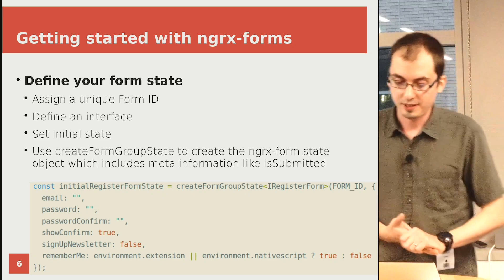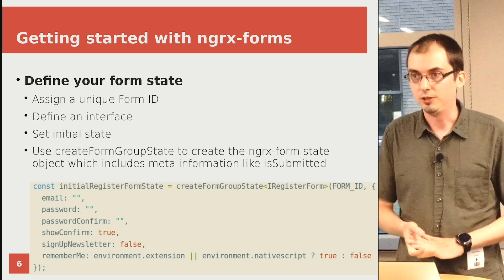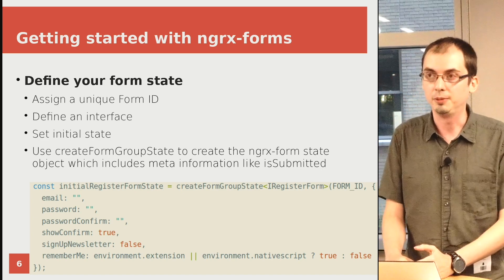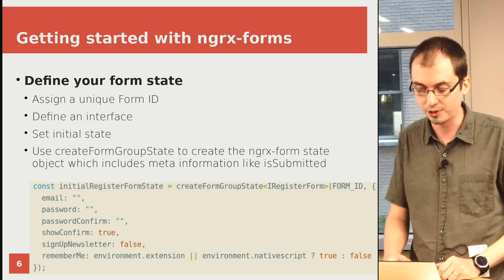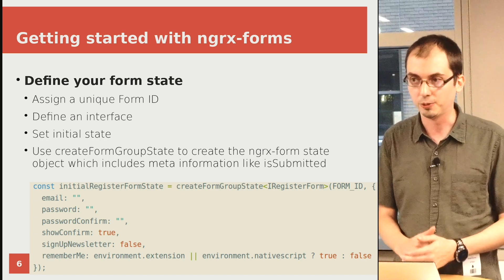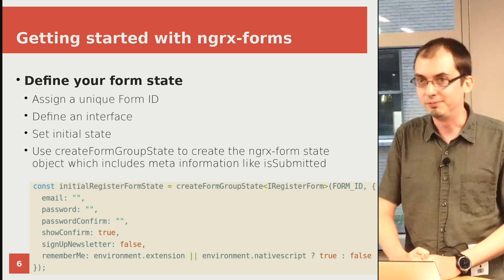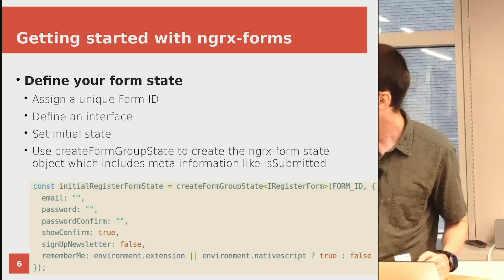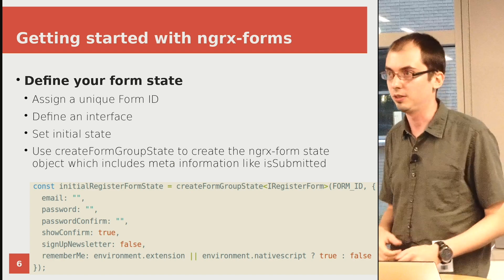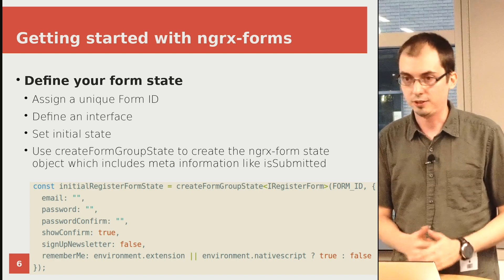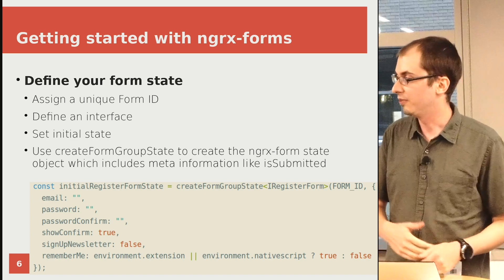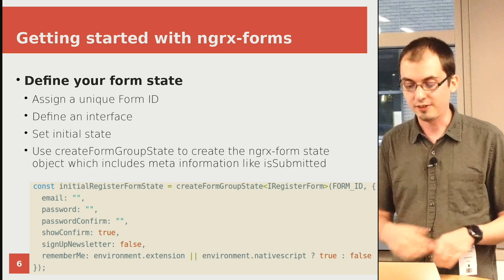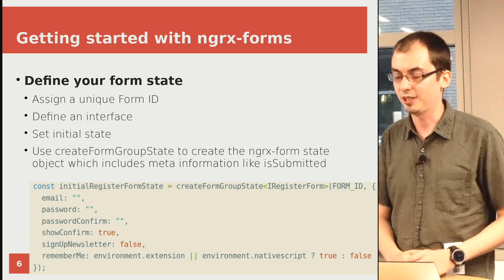How to get started with NGRx Forms: you're going to define your form state and give it a unique form ID — just a string that uniquely identifies that form. You're going to define an interface. If this is a registration form, maybe the interface contains email, password, password confirm, show confirm, and a few things like that. You're going to set your initial state. Then you use the `createFormGroupState` function, passing the form ID and your initial values. What that does is take your basic form values and add a lot of state to it — such as is submitted, different validation states, is pristine — all without having to define them manually in your NGRx reducer.